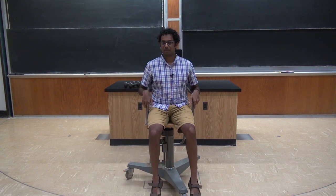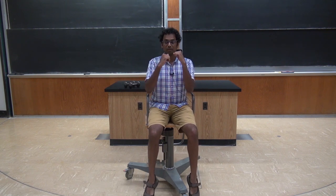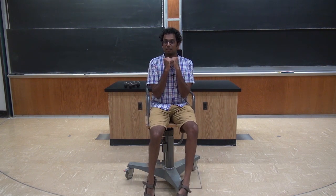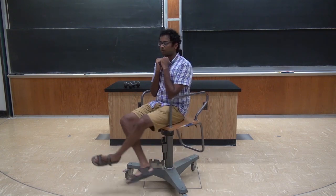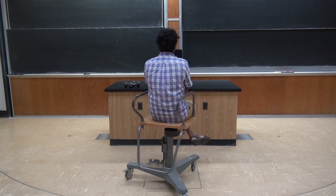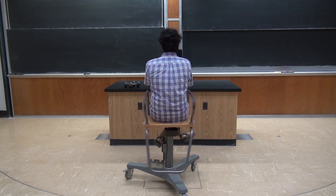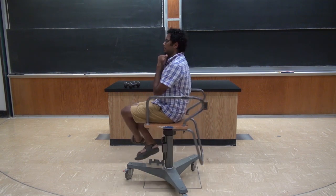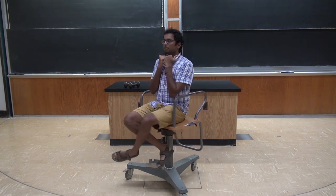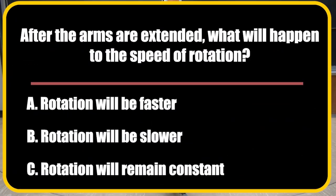So I sit on the chair, I am going to take the weights, I am going to be holding the weights like this and then I push off and start rotating. So at some point, I am just rotating and at some point I am going to extend my arms and what I want you to think about is whether I am going to start rotating faster or slower or with the same speed.